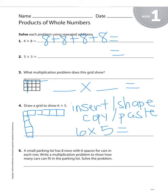Number five, a small parking lot has eight rows with six spaces for cars in each row. Write a multiplication problem to show how many cars can fit in the parking lot. Solve the problem. So you are going to write me a multiplication problem here and solve it, so your answer should look like blank times blank equals.